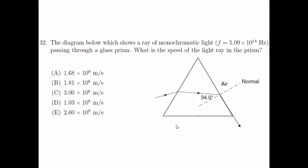The options are: (A) 1.68 x 10^8 m/s, (B) 1.81 x 10^8 m/s, (C) 3.00 x 10^8 m/s, (D) 1.03 x 10^8 m/s, (E) 2.60 x 10^8 m/s.